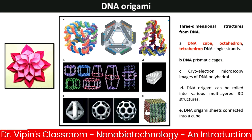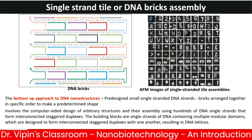Another way of making DNA assemblies is the bottom-up approach using DNA bricks — predefined-sized DNA strands arranged together in order to make a 2D or 3D structure, like building a wall using bricks. This involves computer-aided design of arbitrary structures and their assembly using hundreds of single DNA strands that form interconnected staggered duplexes.